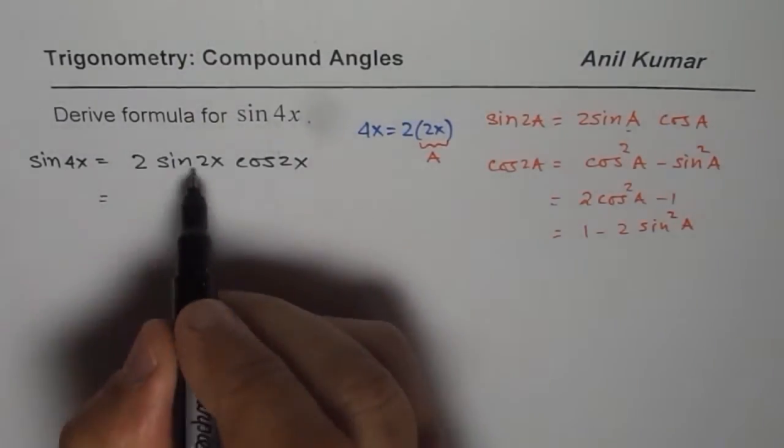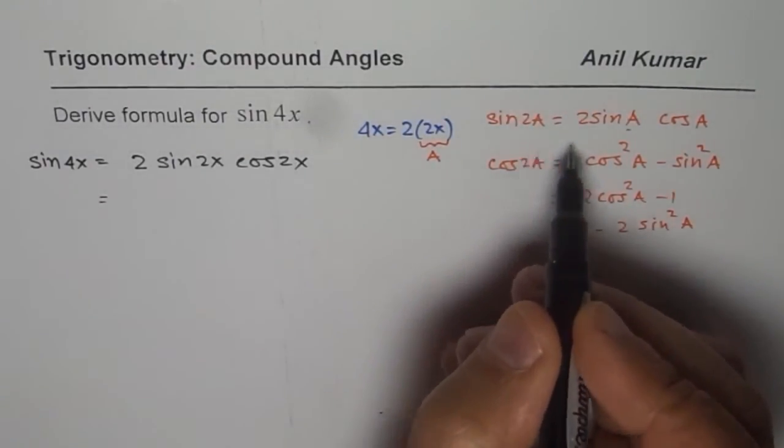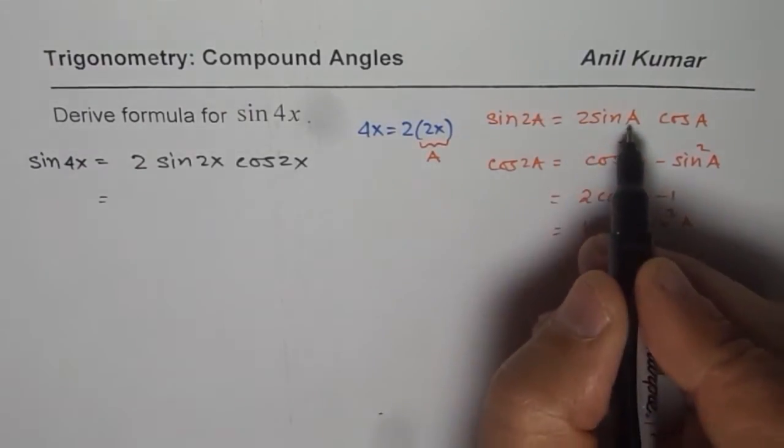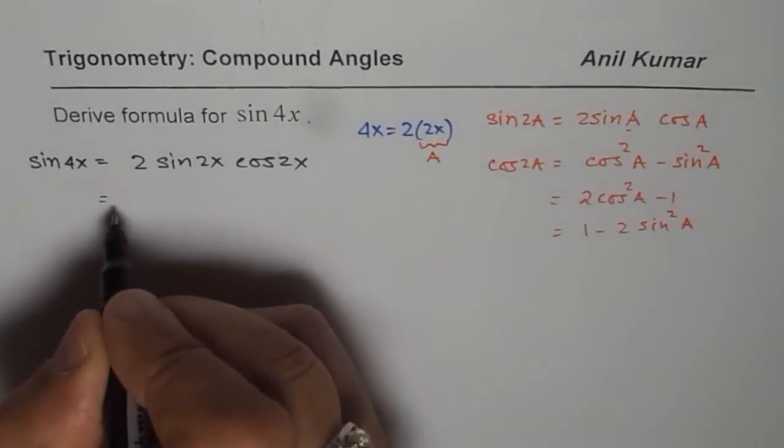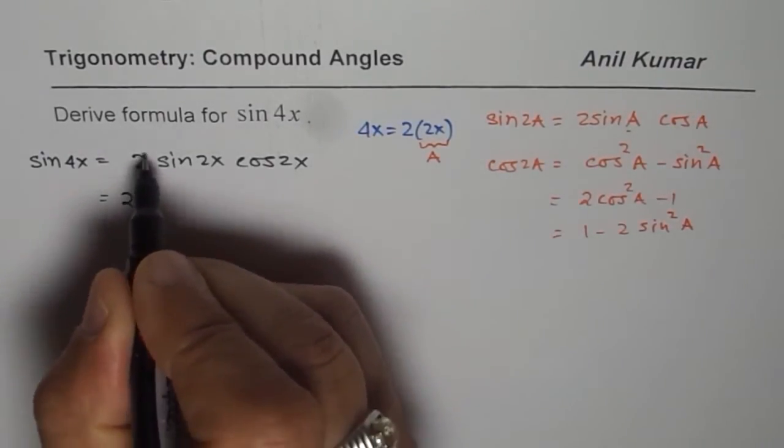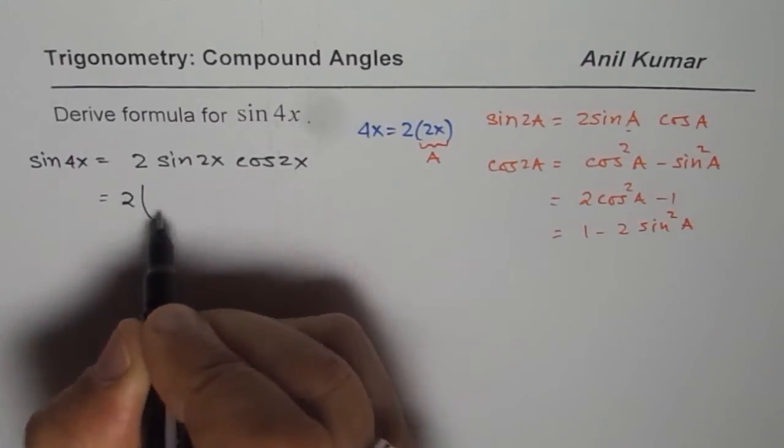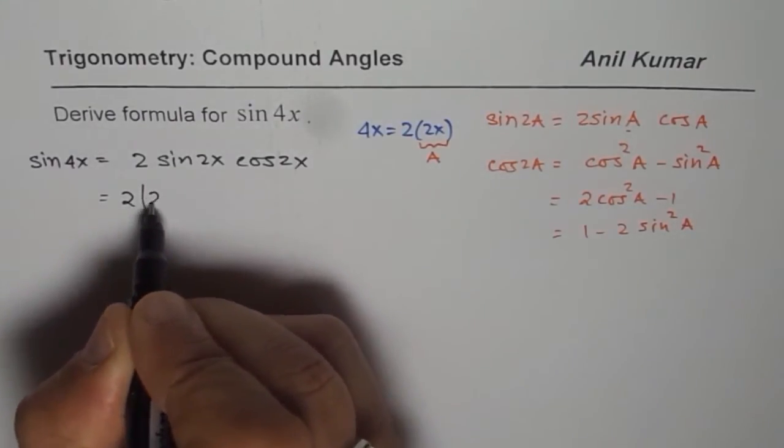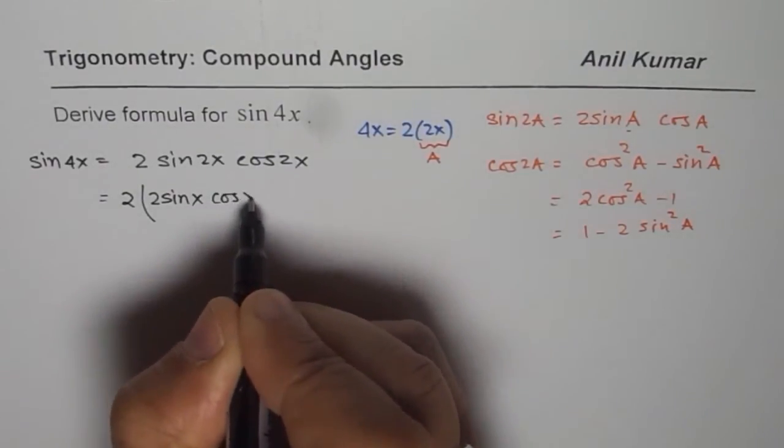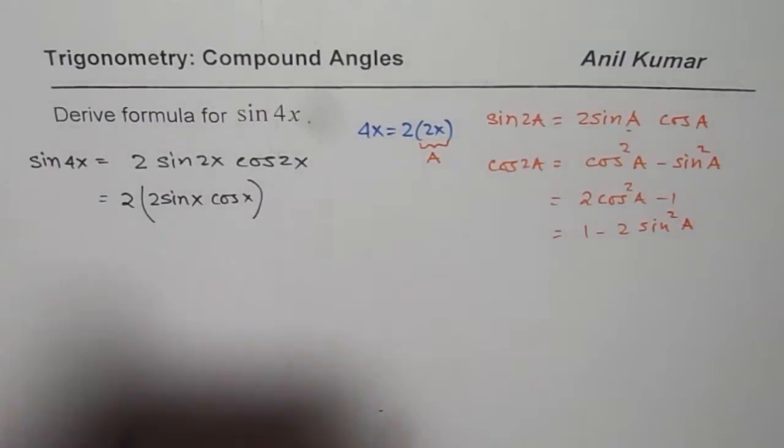Now let us go further. We will apply this formula once again. For me, 2x is 2a, so I will replace a with x. I can write this as 2 times... we have sin 2x. For sin 2x, we write 2 sin x cos x.